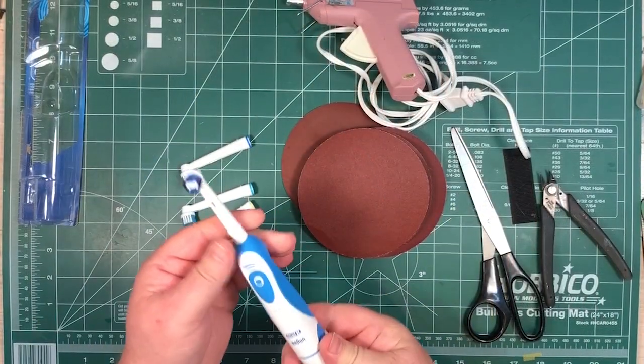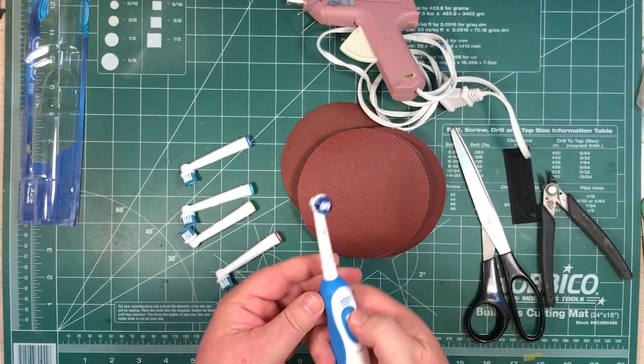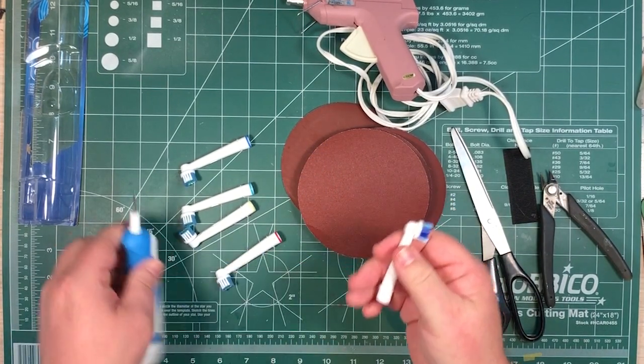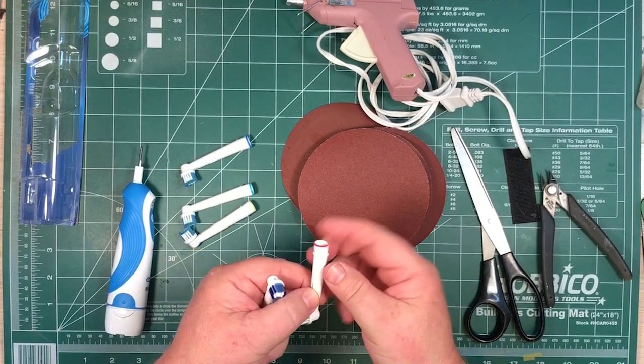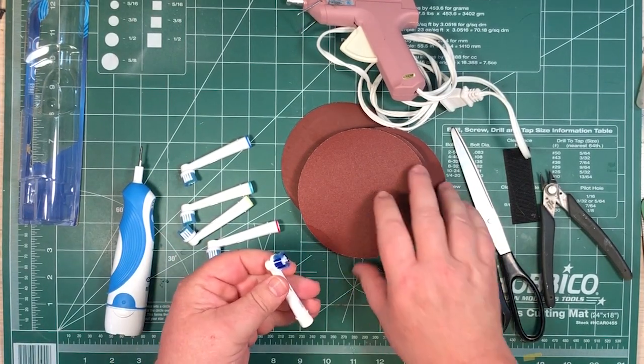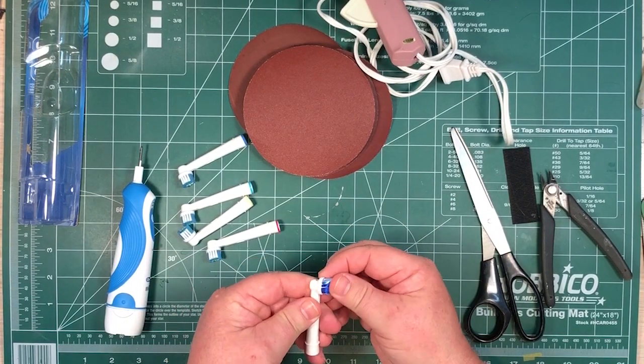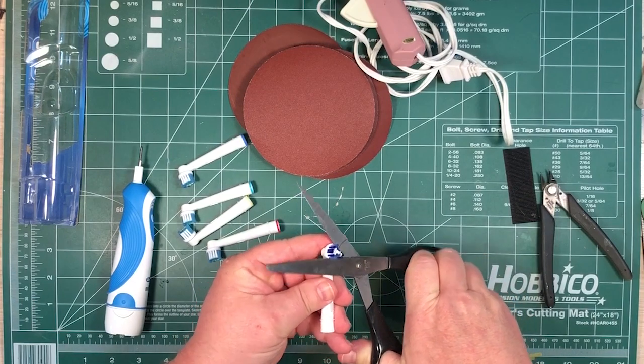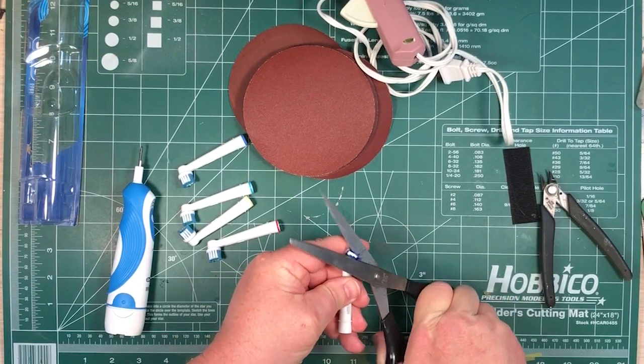So step one, put the batteries in, make sure it works. So that's easy enough. Take that off. I've taken these out of here, put the little colored bands on just so I can tell the difference. The first thing I'll do is cut all these nice bristles off. You can use scissors for that, at least to start with.